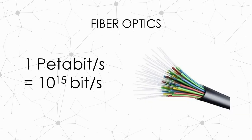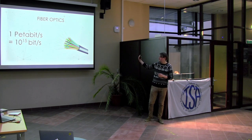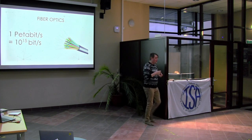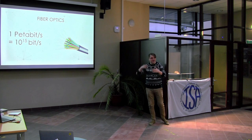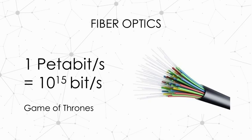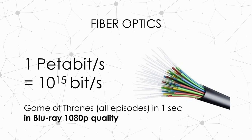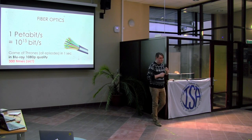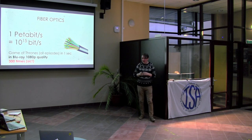The great thing about fiber optics is it's very fast. The current speed is around one petabit per second, which is 10^15 bits per second. These numbers are so astronomically high you can't really grasp it. To put it in perspective: 10^15 bits is all episodes of Game of Thrones in 1080p Blu-ray quality, sent 300 times — and fiber optics can send that in one second.